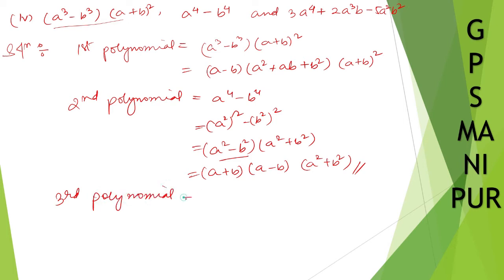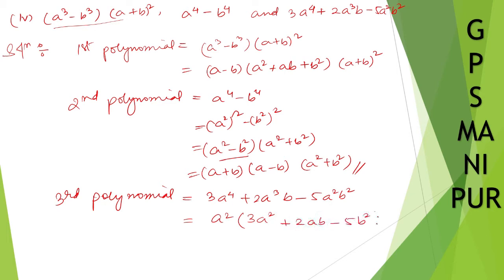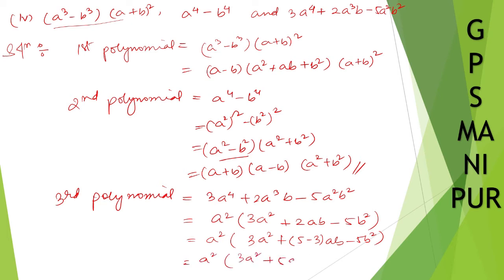Third polynomial is 3a to the power 4 plus 2a cube b minus 5a square b square. First, take a square common: a square times (3a square plus 2ab minus 5b square). Now split the middle term — 3 times 5 is 15 — so: 3a square plus 5ab minus 3ab minus 5b square.